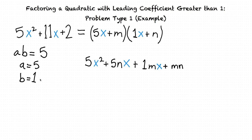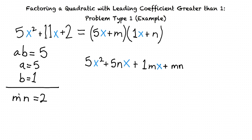Now that we've set a = 5 and b = 1, our next step is to figure out what m and n must equal. The constant term in our original expression is 2, and in the factored form it's mn, so m × n = 2. The possible pairs are: m=1, n=2; m=−1, n=−2; m=2, n=1; or m=−2, n=−1.